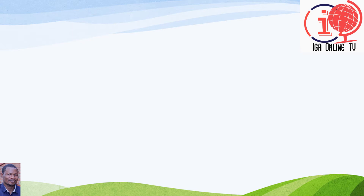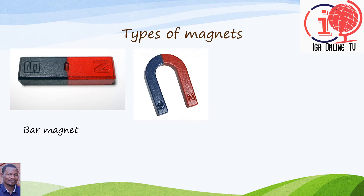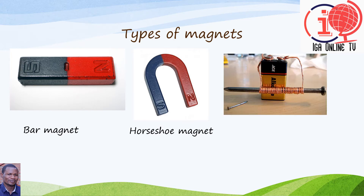What are the types of magnets? There are three main types of magnets. The first one is the bar magnet. The next one is called the horseshoe magnet. And the third is the electromagnet.